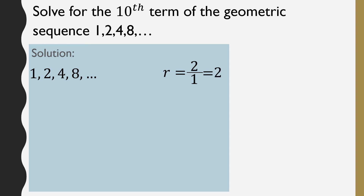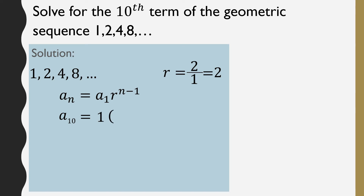Next, we write down the formula: a sub n is equal to a sub 1 times R raised to the power of n minus 1. We substitute the values: the 10th term is unknown so n is 10, the first term is 1, and R is 2. So we have a sub 10 equal to 1 times 2 raised to the power of 10 minus 1.